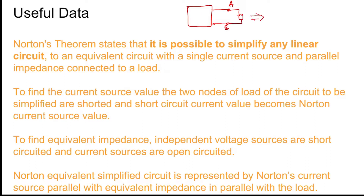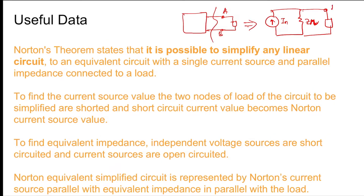With the load connected, we can use Norton's theorem to simplify the circuit to an equivalent current source in parallel with some impedance Z_Norton connected to the load between terminals A and B. This part of the circuit is modified with the help of Norton's theorem.